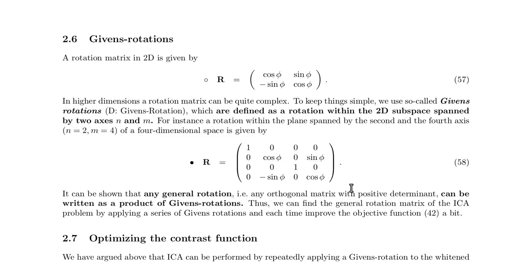Now we have a relatively simple objective function and we know that under rotation we can simply rotate the cumulants rather than recalculating them each time. The question arises: how do we perform a rotation? In 2D that is very easy. The rotation matrix is [[cos φ, sin φ], [−sin φ, cos φ]].